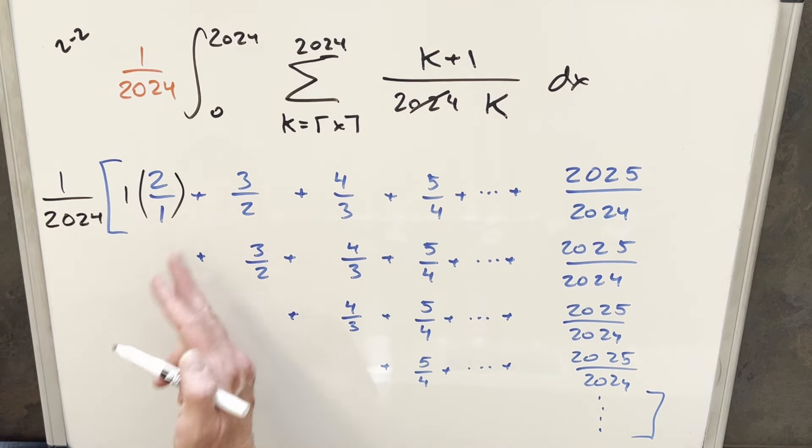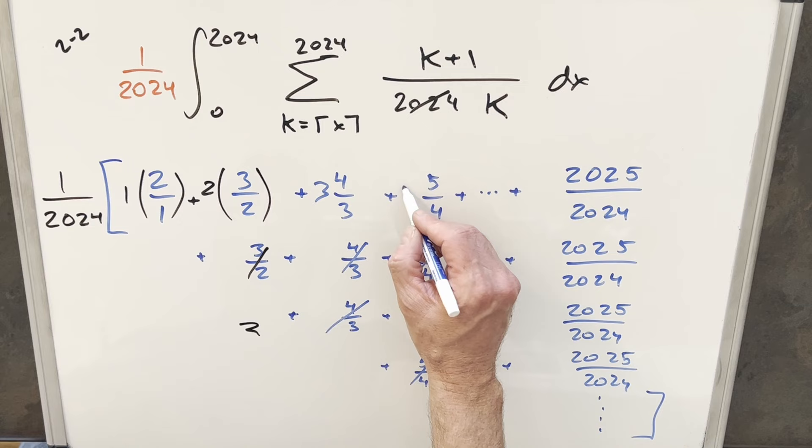But then for this next term, three halves, it's only going to occur twice at the third integral. There's nothing here, this is gone. So we can get rid of this and just consider this two copies of three halves. And then doing the same thing over here, we've got three copies of four thirds. So we can have three in front there. And then we have four copies here of five fourths. So these can go away, and we can put a four here.